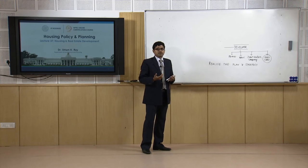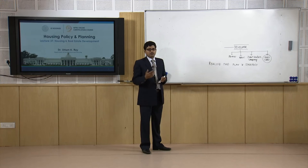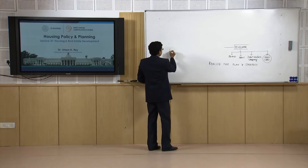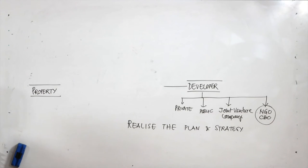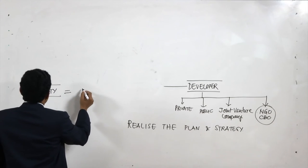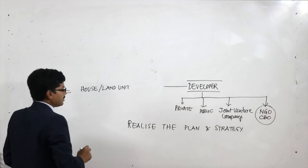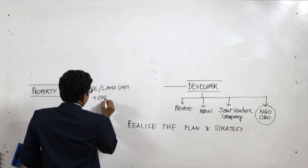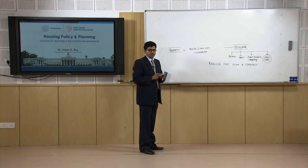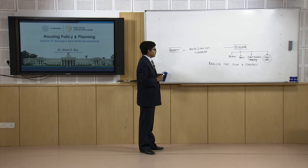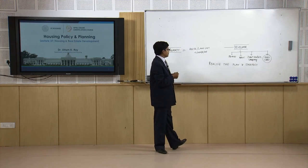What kind of property or units do they develop? Before discussing the overall network of how the developer, planner and government work together, let us see what kind of property developers consider for development. At this moment we are bringing in the term 'property.' Property is basically the house unit or land unit plus ownership. Any house unit or land, if you have legal ownership, it becomes a property. Developers are more involved in property development - it is not just the development of infrastructure or housing units, it is the development of property, which is called real estate development.